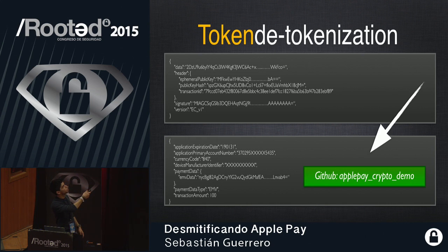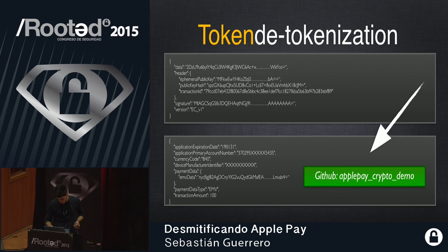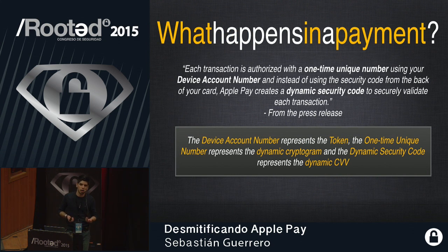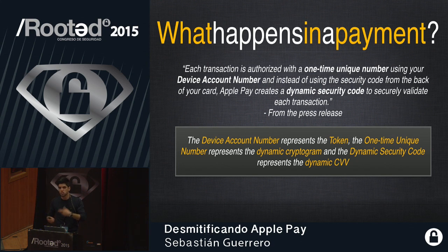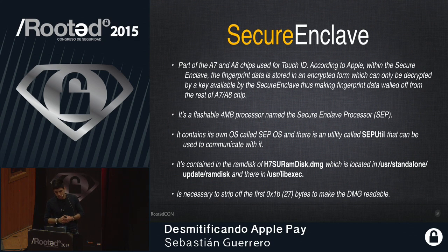After modifying the binary, you can see the token — the data, header, version, and signature. If you go to the GitHub project and swipe through it, you get all the data from the user. Each transaction is authorized with a one-time unique number using your device account number. Instead of the security code from the back of your card, Apple Pay creates a dynamic security code to validate each transaction. The device account number represents the token, the one-time unique number represents the dynamic cryptogram, and the dynamic secure code represents the dynamic CVV.